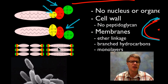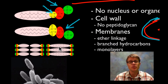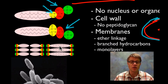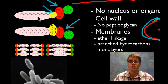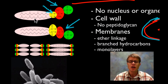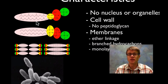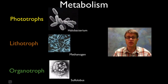You might be thinking: why is their membrane so different? Well, a lot of archaebacteria can live in harsh environments, and if you have a monolayer or a more complex hydrocarbon tail you can deal with bigger and higher temperatures, as well as bigger fluctuations in pH. Those are some of the key characteristics of archaebacteria.